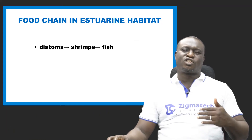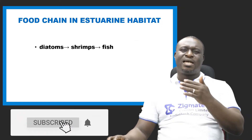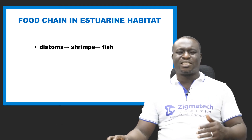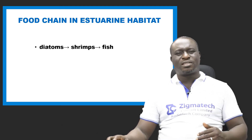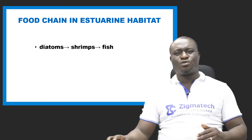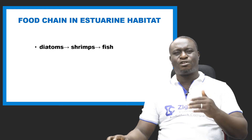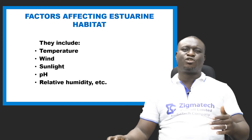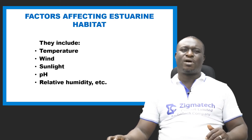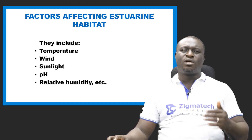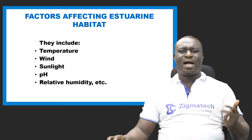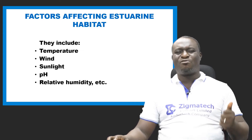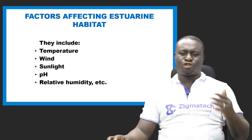We also have mosquito larvae, which possess breathing trumpets for gaseous exchange. Crabs are also found in estuarine habitat — they can burrow fast into the mud when they encounter predators or strong waves. The food chain in estuarine habitat: diatoms as producers, shrimps as primary consumers, and fish as secondary consumers. Factors affecting estuarine habitat include temperature, sunlight, pH, relative humidity, and others.